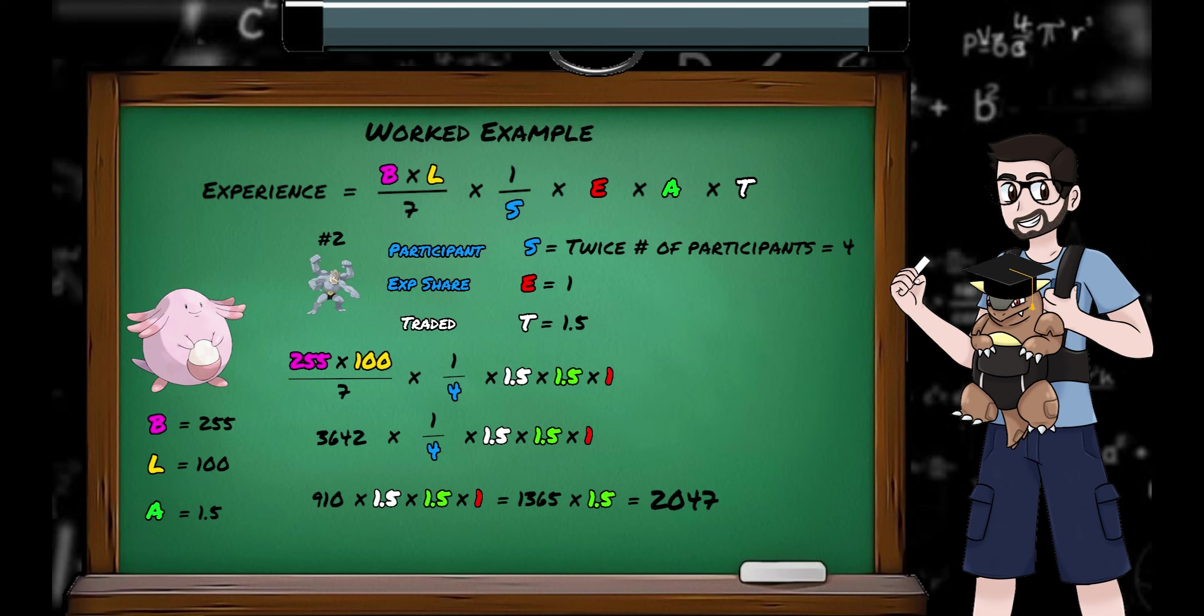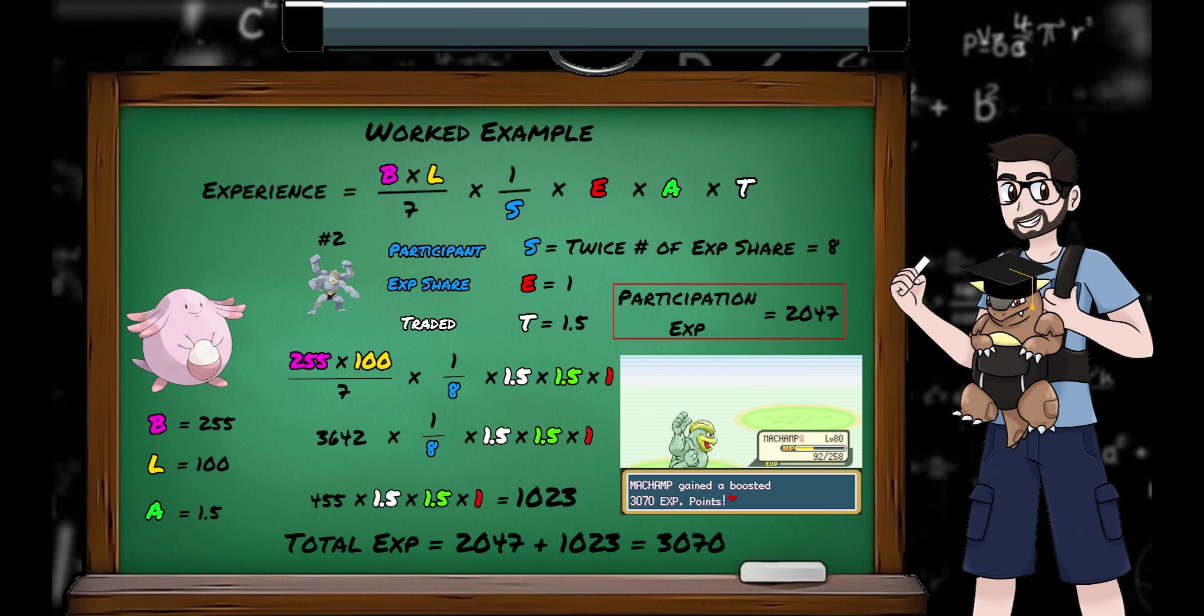Machamp both participated and has an XP share, so they'll be getting 2 XP calculations. The participation XP will be the same as for Charmander, as we might not be holding the lucky egg, but we are traded, so we've replaced the times 1.5 for the egg, with the times 1.5 for being traded. So the result is identical, that's 2047 so far.